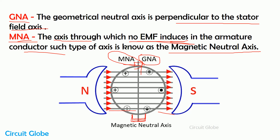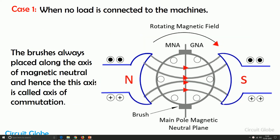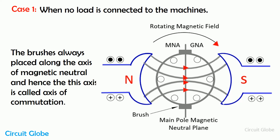This is the magnetic neutral axis and this is the geometrical neutral axis of the DC machine. For understanding the armature reaction, consider three cases. First, consider this is the image of the DC machine. The circle shows the armature conductor and these are the main magnetic field system, the magnetic flux, the magnetic neutral axis, the geometrical neutral axis, and the brushes. The first case is when no load is connected to the machine.